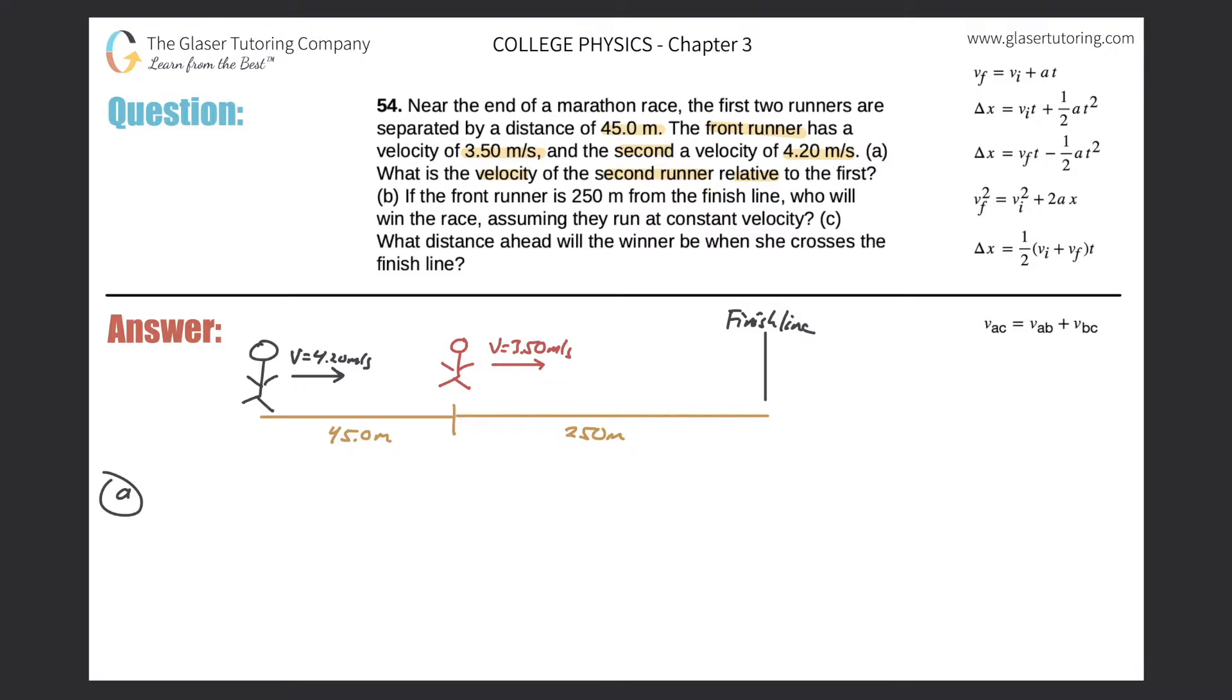So let's take a look first at letter A. We have to find the velocity of the second runner relative to the first. Anytime we're talking about relative velocities, you're going to want to consider this formula on the right hand side. The A and C and B, they all just represent any item you like.